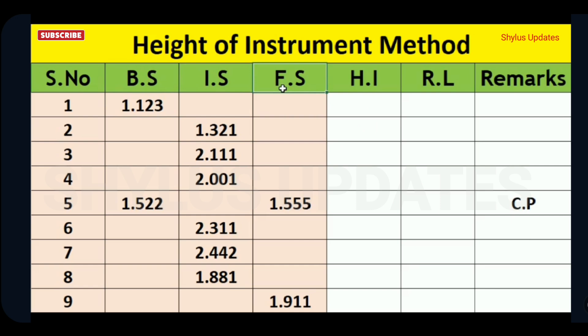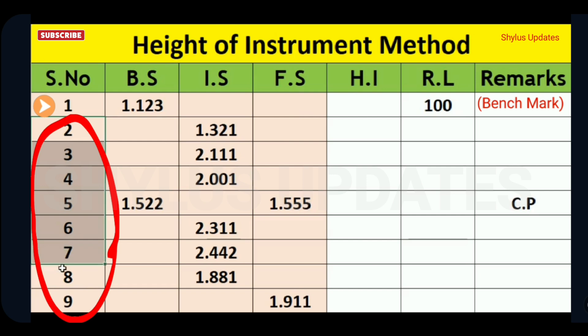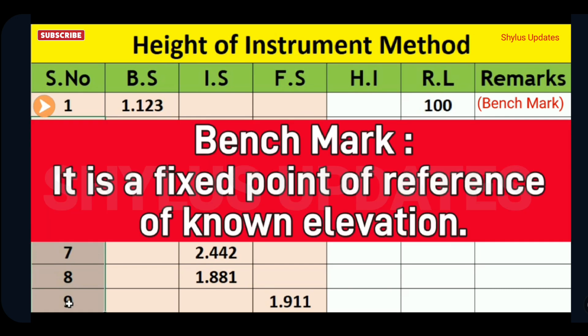Reduced level of first point is already given in question, which is 100 meter. That is the benchmark, 100 meter. Therefore, we need to find reduced level of remaining points, that is from 2 to 9 points. Before that, you must know what is meant by benchmark. It is a fixed point of reference of known elevation.